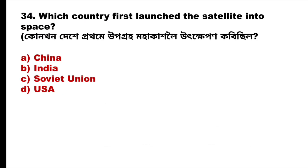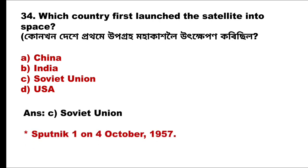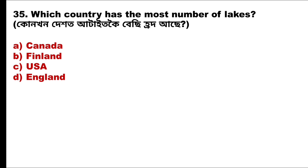Question 34: Which country first launched a satellite into space? The answer is option C, the Soviet Union, with Sputnik 1 on 4th October 1957.